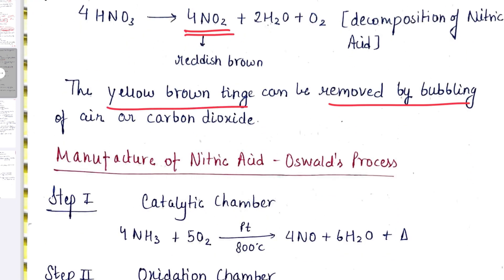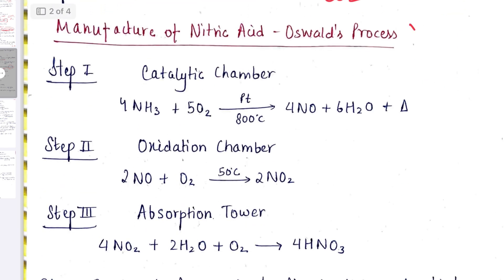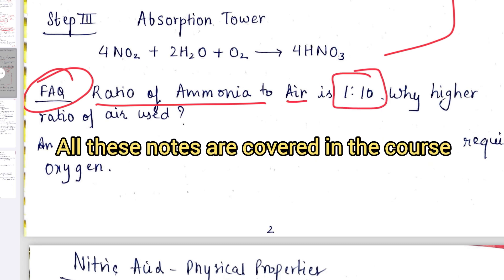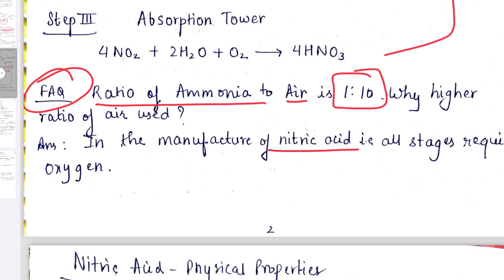Then these named reactions like Oswald's process. Now this frequently asked question: ratio of ammonia to air is 1 is to 10. Why higher ratio of air is used in the manufacture of nitric acid? That is all stages require oxygen. That is why we have kept air in 10 ratio.